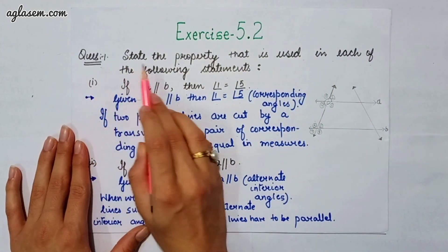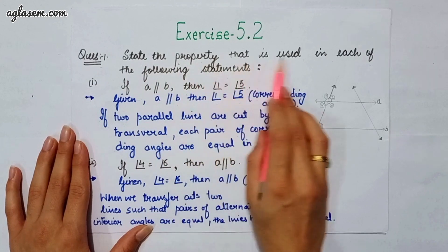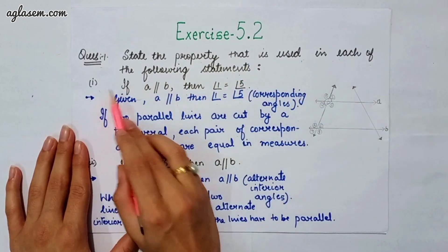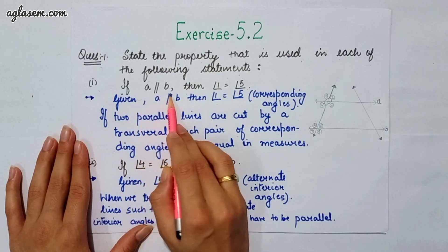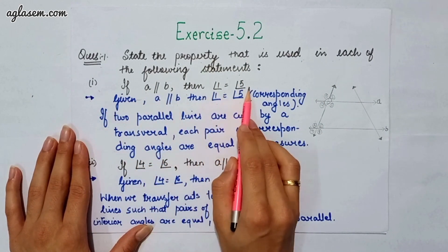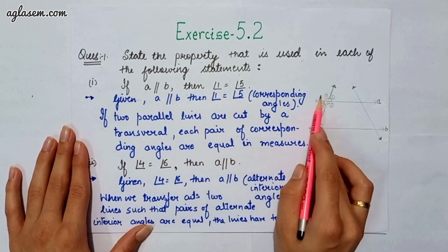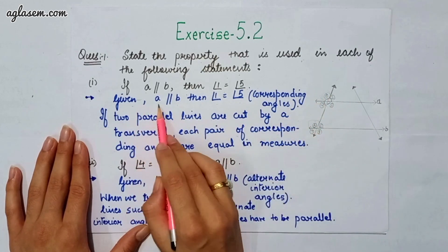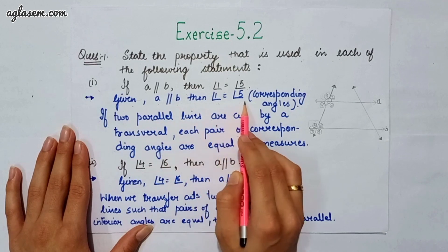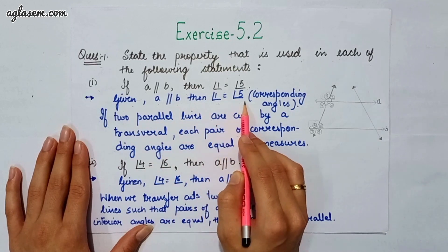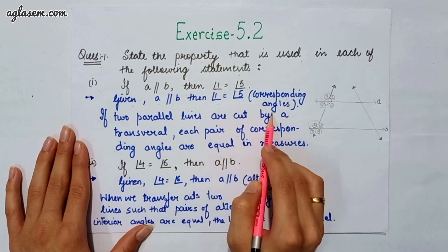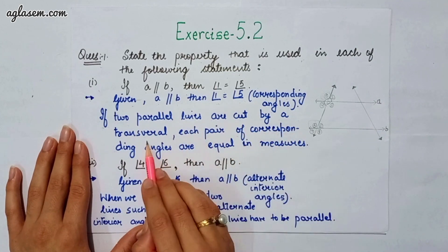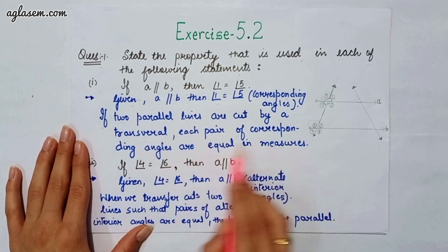Our first question says: state the property used in each of the following statements. Part one says if A is parallel to B, then angle 1 is equal to angle 5. Given that A is parallel to B and angle 1 equals angle 5, this is by corresponding angles — if two parallel lines are cut by a transversal, each pair of corresponding angles are equal in measure.